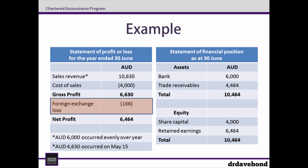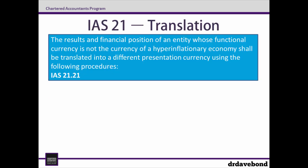So how do we translate these Aussie-denominated statements into pounds? To do that we turn to paragraph 21 of IAS 21. The results and financial position of an entity whose functional currency is not the currency of a hyperinflationary economy shall be translated into a different presentation currency using the following procedures. And these procedures all turn on the accounting element involved.